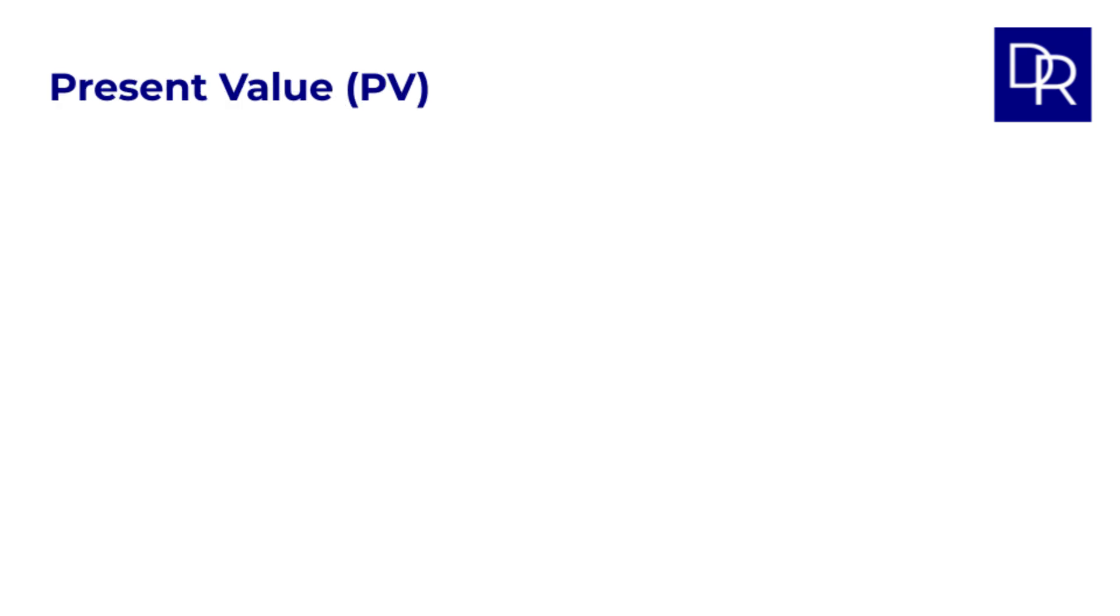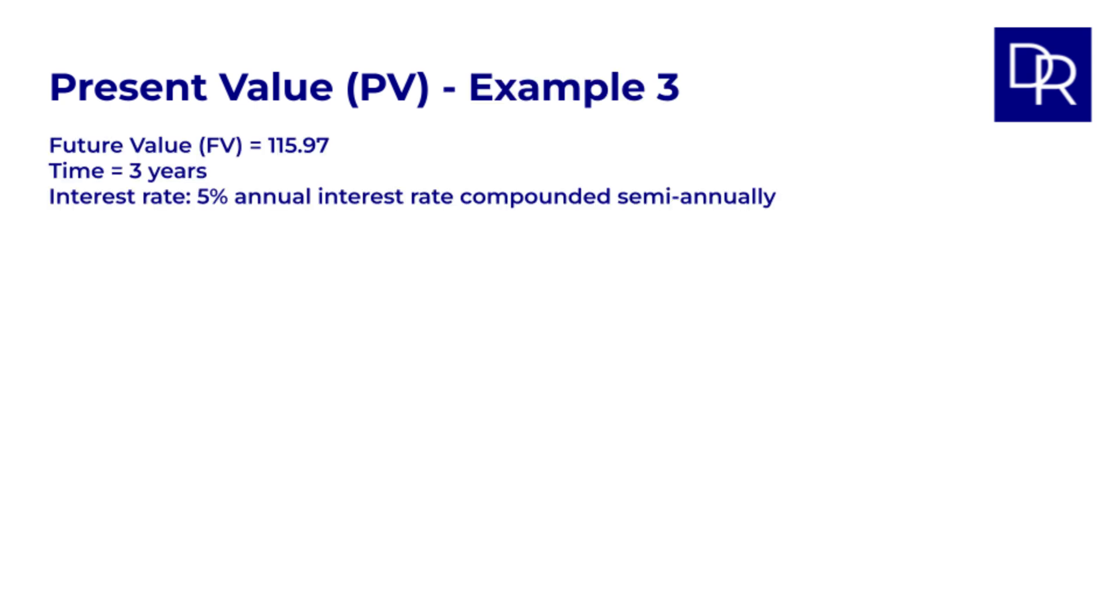Now, let's move on to present value. In derivatives valuations, we are interested in modeling expected future cash flows and then calculating the present value or PV today. This process is called discounting and is something we will be doing a lot in future lessons. Let's say in example 3, we expect to receive 115.97 in 3 years time and the appropriate annual discount rate is 5%. Compounding is again every 6 months like in example 2.